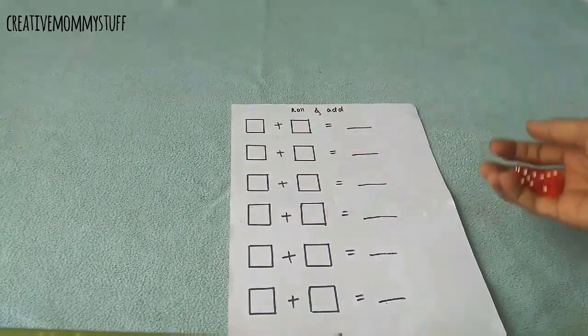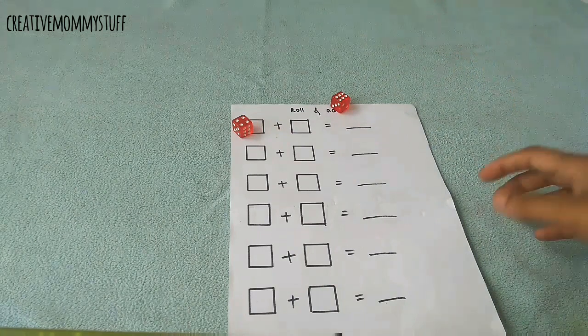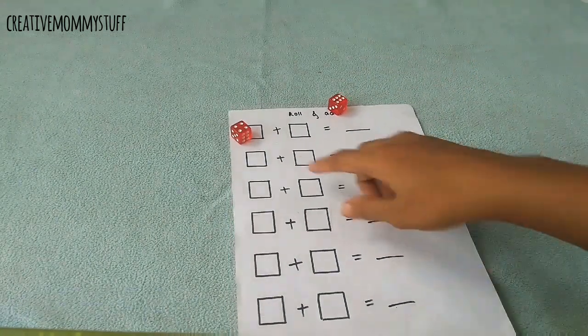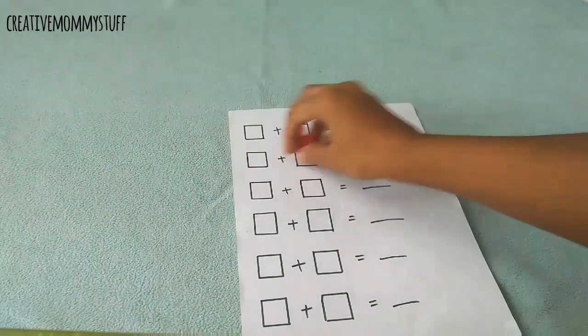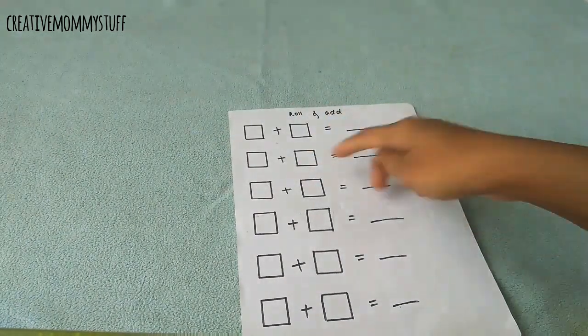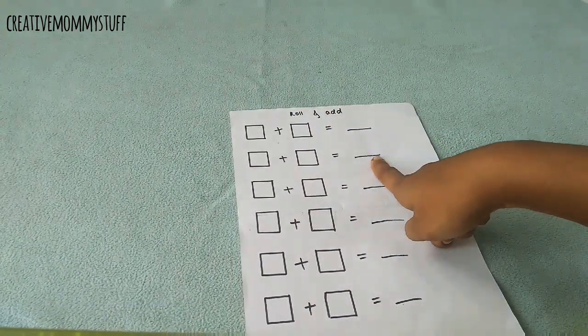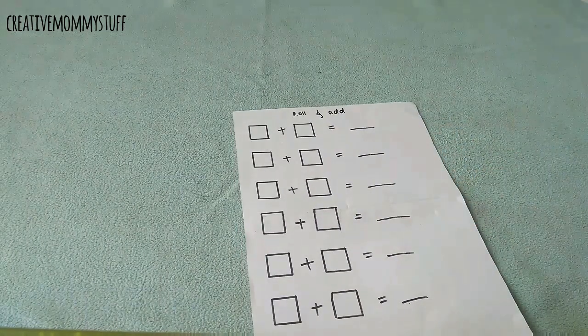This is a nice hands-on activity for learning addition. So four plus six will be ten. Like this, she has to roll the dice, write the numbers, and then add them and write it here. So move on to the next activity.